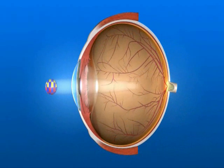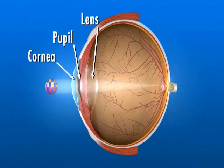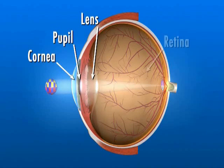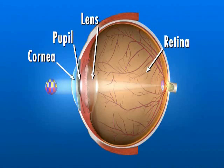Light rays enter the eye through the clear cornea, pupil, and lens. These light rays are focused directly onto the retina, the light-sensitive tissue lining the back of the eye. The retina converts light rays into impulses sent through the optic nerve to the brain, where they are recognized as images.